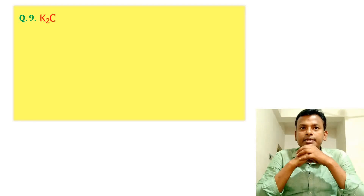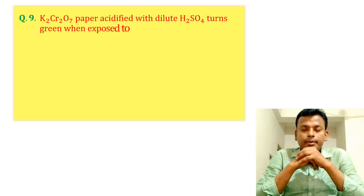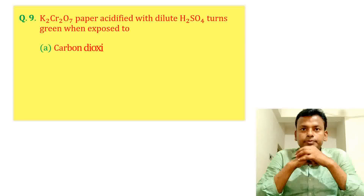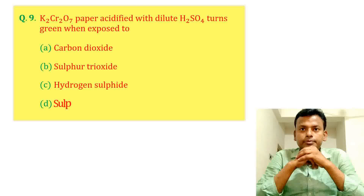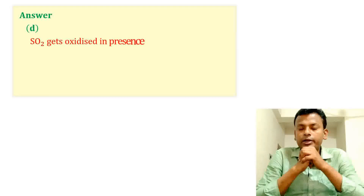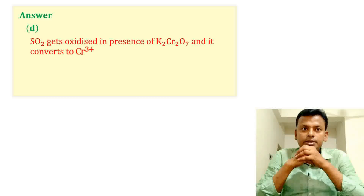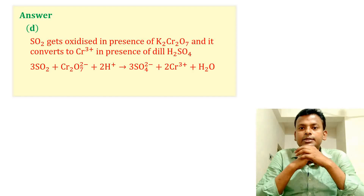Question 9: K2Cr2O7 paper acidified with dilute H2SO4 turns green when exposed to which substance? Options A, B, C, D. Answer: Option D is correct. SO2 gets oxidized in the presence of K2Cr2O7 and it is converted to Cr3+ in the presence of dilute H2SO4. So sulfur dioxide is the correct answer, option D.